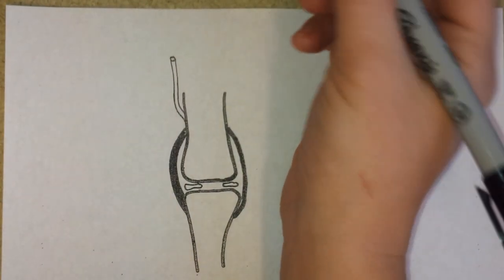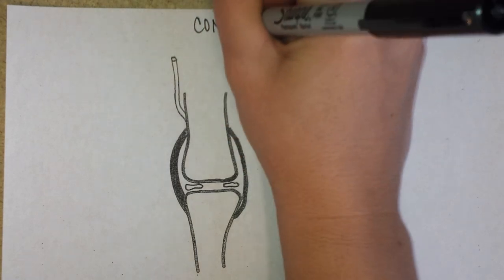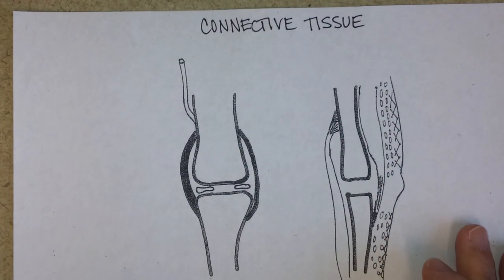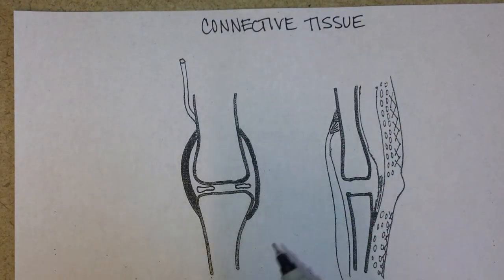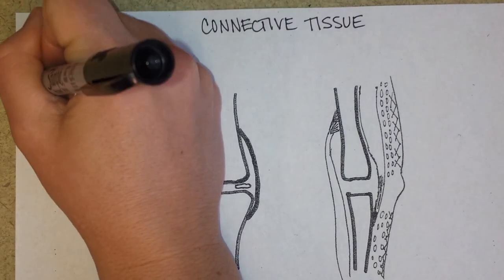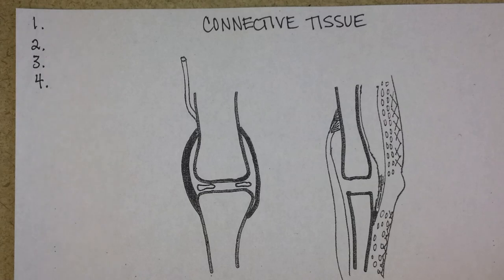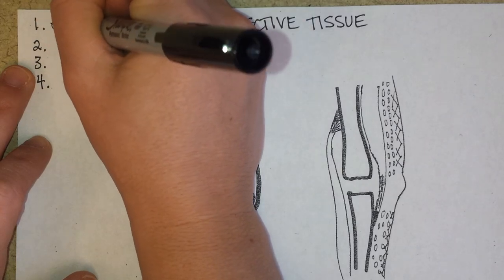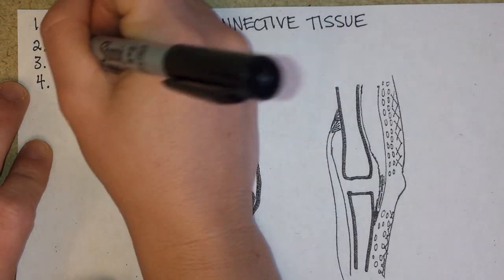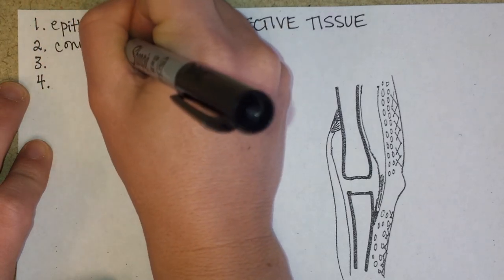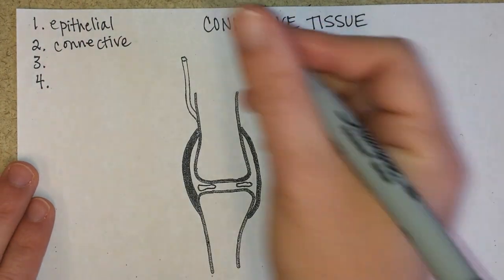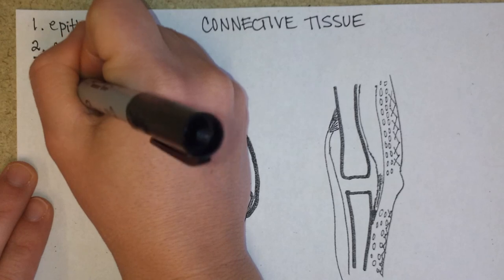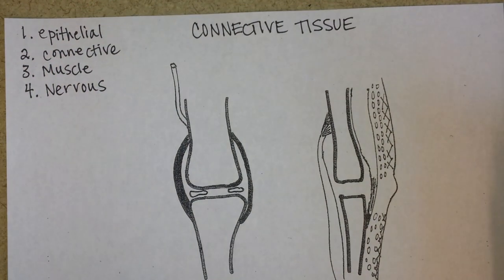This page of your notes is titled Connective Tissue. As a reminder of where we are in the big scheme of things, every part of your body that you touch is one of four kinds of tissues: epithelial, which are the linings; connective, which are tendons, ligaments, fat, and blood; muscle, which contracts to help things move through the body; or nervous, which are cells that can fire electrical signals.